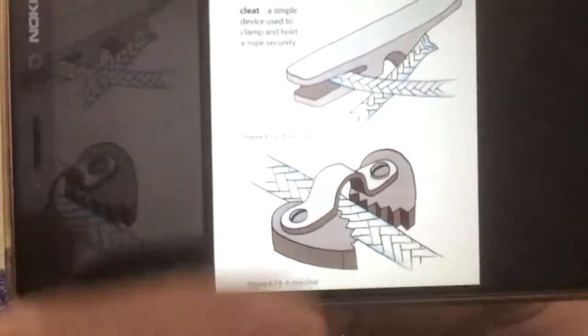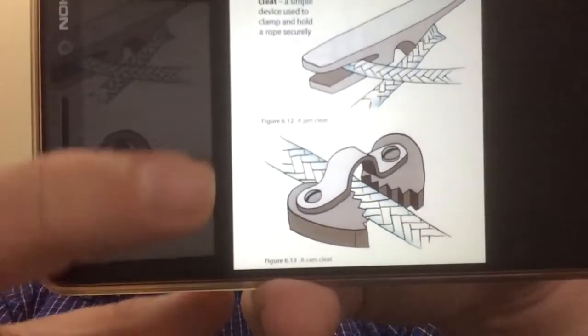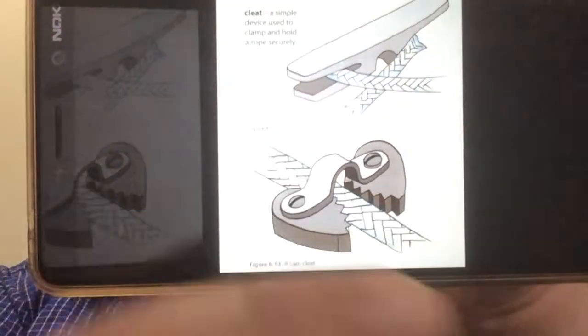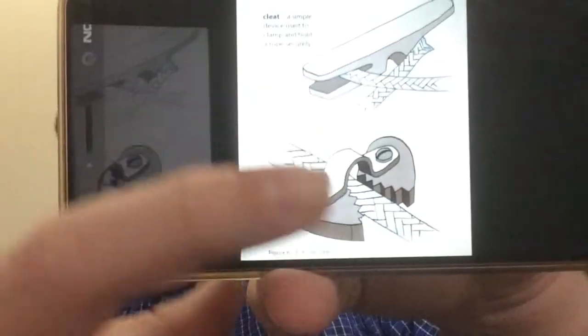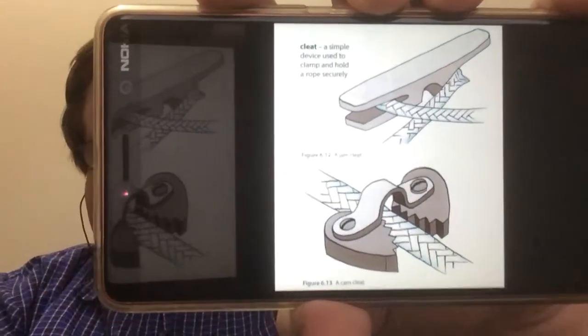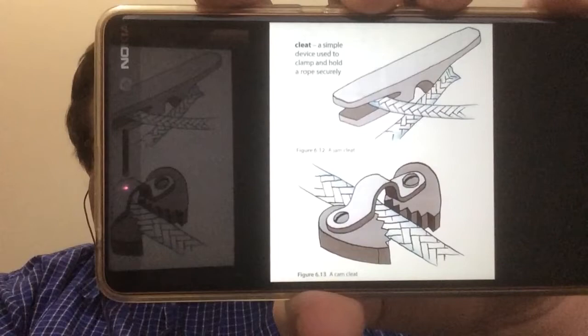Jam cleat's got some very interesting little teeth into it. You can imagine that rope can quite freely slide through in one direction. But if you try to pull it in the opposite direction, then they dig in and they hold the rope nice and tight. And they kind of lock it in position for you.